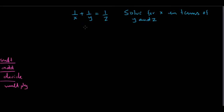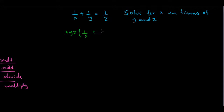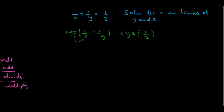One more example: 1 over x plus 1 over y equals 1 over z, solve for x in terms of y and z. There are fractions, so multiply both sides by the product of all denominators, x times y times z. The x cancels in the first term leaving yz; the y cancels in the second term leaving xz; and the z cancels on the right leaving xy.